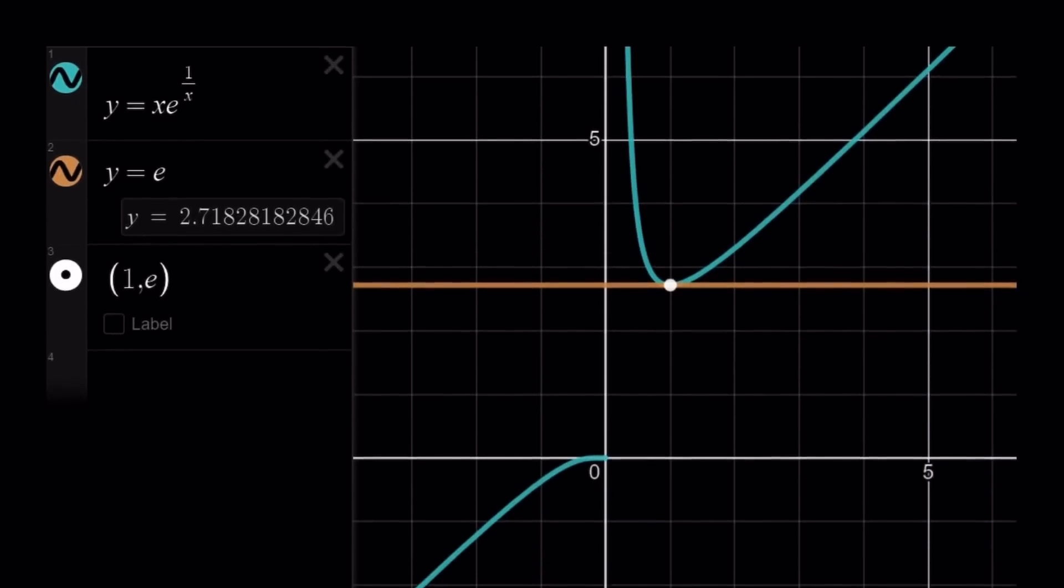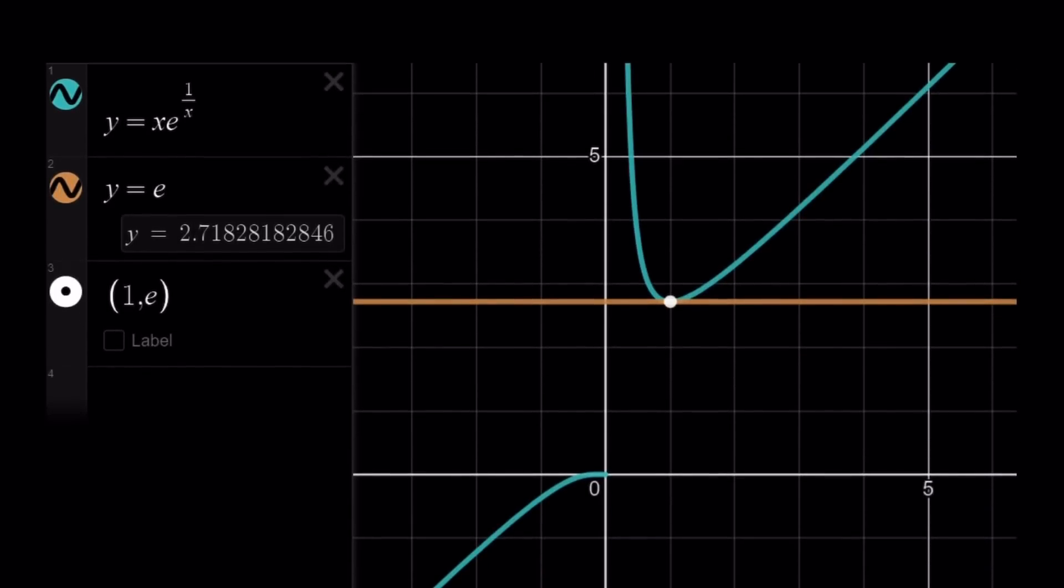Here we go. Here, I graphed y equals x times e to the power of one over x and y equals e, which is the horizontal line, the orange one. And the blue one is the exponential thing. Notice that they are tangent at one comma e. This is e, by the way, and this is one. So that means the horizontal line intersects the curve only at one point. The other one cannot be intersected. Therefore, there's only one solution and that is x equals one.